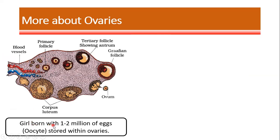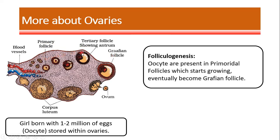When a girl child is born, she is born with nearly one to two million eggs or oocytes stored within the ovary. These oocytes generally remain in a primordial condition, covered within a follicle. Over a period of time, the primordial follicle grows — becoming a primary follicle, then secondary, and ultimately a Graafian follicle. This entire process of follicle and oocyte growth is known as folliculogenesis — meaning the growth of follicles.